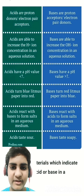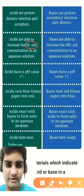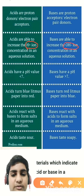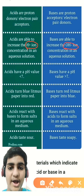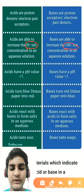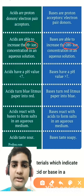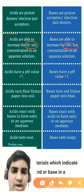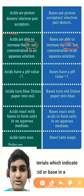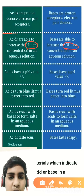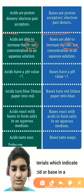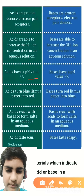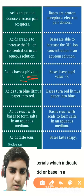Acids are able to increase the H⁺ ion concentration and bases increase the OH⁻ ion concentration. When an acid reacts in solution it releases H⁺ (hydrogen) ions — that is what makes it an acid. When a base is in solution it releases OH⁻ (hydroxide) ions. Simply put: acid releases H⁺ and base releases OH⁻. Acids have pH less than 7 and bases have pH greater than 7.